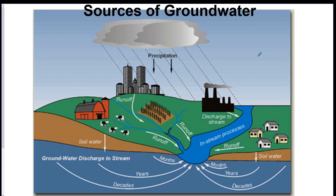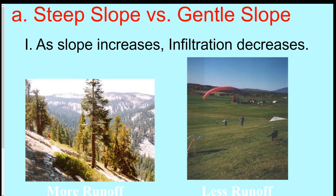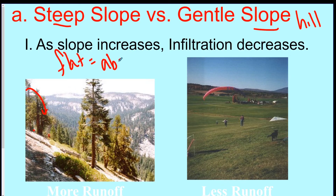Here are a couple of sources of groundwater: precipitation and runoff that goes into a stream, which then sinks into the ground. What affects how much water gets into the ground? If you have a steep slope versus a gentle slope — on a steep hill, water will fly down and not have time to settle and sink in. But on a gentle, flat slope, it has a lot more time to absorb through. Flat equals absorbs better. As slope increases and becomes steeper, your amount of infiltration goes down.